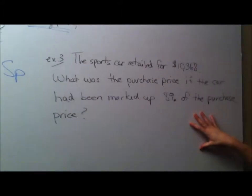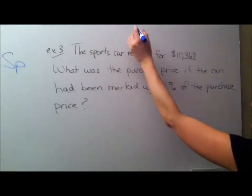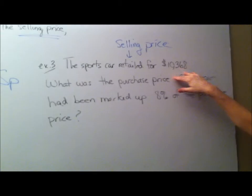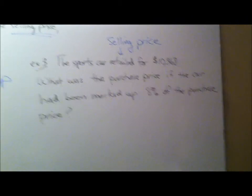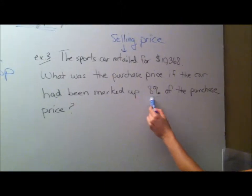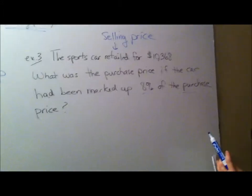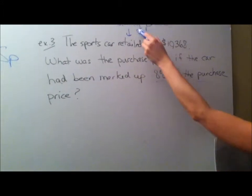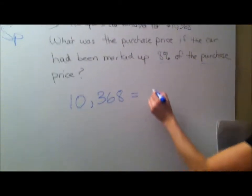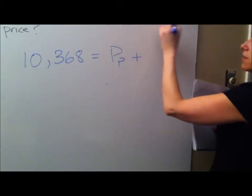Third example. Final example. The sports car retail, and that retail price is actually the selling price. The car was selling for $10,368. What was the purchase price? So here we need the P sub P if the car had been marked up 8% of the purchase price. So this is the same as the first problem except they said retail. So that's the selling price. So we get $10,368 equals the purchase price plus 8% of the purchase price. So it's .08 of the purchase price. And we're going to do the same thing.